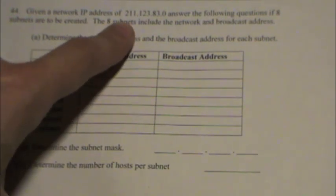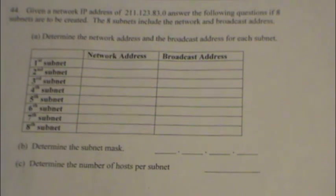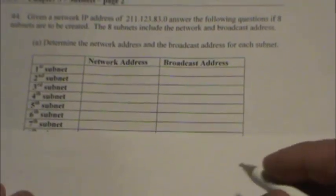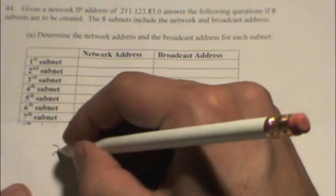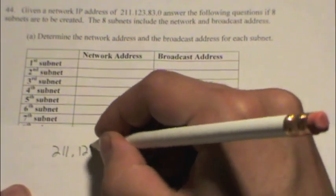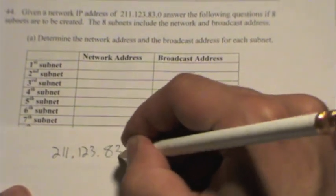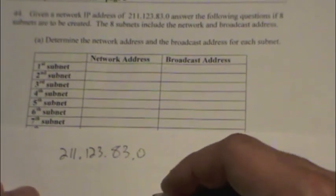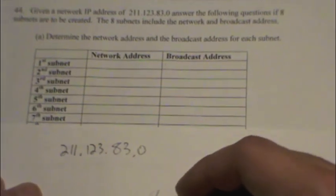So let's go ahead and write down the information that we have available to us, which isn't too much. Again, it's 211.123.83.0, and we know we need eight subnets.